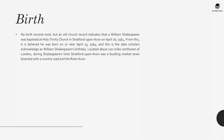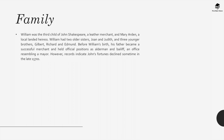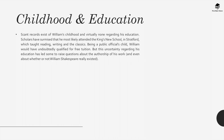Located about 100 miles northwest of London, during Shakespeare's time Stratford-upon-Avon was a bustling market town bisected with a country road and the river Avon. William was the third child of John Shakespeare, a leather merchant, and Mary Arden, a local landed heiress. William had two older sisters, Joan and Judith, and three younger brothers, Gilbert, Richard, and Edmund. Before William's birth, his father became a successful merchant and held official positions as alderman and bailiff, an office resembling a mayor. However, records indicate John's fortunes declined sometime in the late 1570s. Scant record exists of William's childhood and virtually none regarding his education. Scholars have surmised that he most likely attended the King's New School in Stratford, which taught reading, writing, and the classics. Being a public official's child, William would have undoubtedly qualified for free tuition. But this uncertainty regarding his education has led some to raise questions about the authorship of his work, and even about whether or not William Shakespeare really existed.